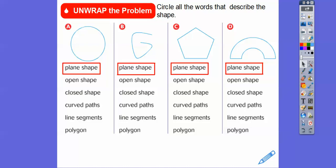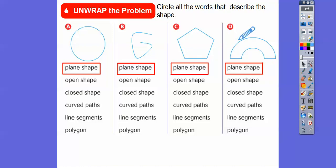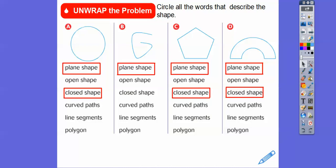Let's talk about open or closed. This one is a closed shape — it's not a polygon, but it is closed. This one is an open shape because there's no inside and outside; we didn't start and end at the same spot. The circle starts and ends at the same spot. If it has an inside and an outside, it's called a closed shape. So this is closed, this is open, and this is closed because there's an inside and an outside.